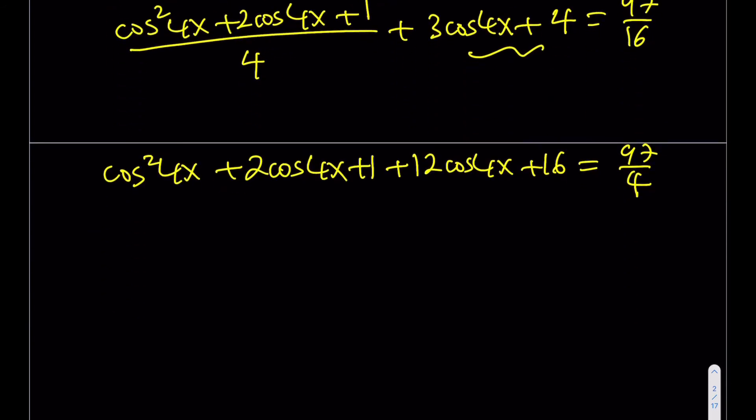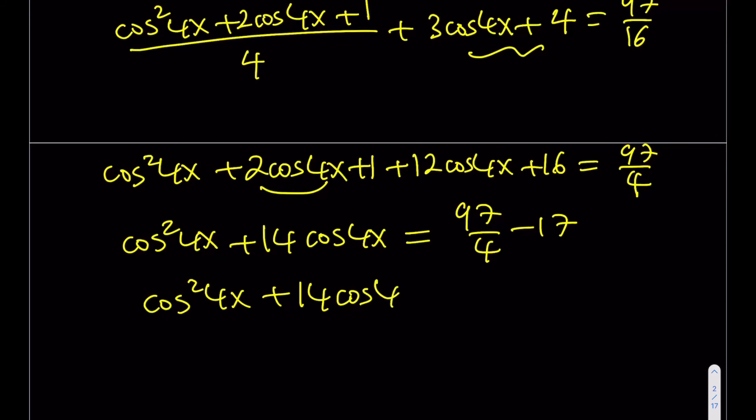We're almost there. Let's go ahead and simplify this. Plus, we'll get cosine squared of 4x plus 2 cosine of 4x and then plus 12 cosine of 2x, that's going to give me 14 cosine of 4x. 1 plus 16 is going to be 17. If I go ahead and subtract 17 from this number, we should be getting something nicer. Well, 4 times 17 is going to be 68, and if you subtract 68 from 97, 97 minus 68 is going to be 29. So I'm going to be getting this plus that is equal to 29 over 4.